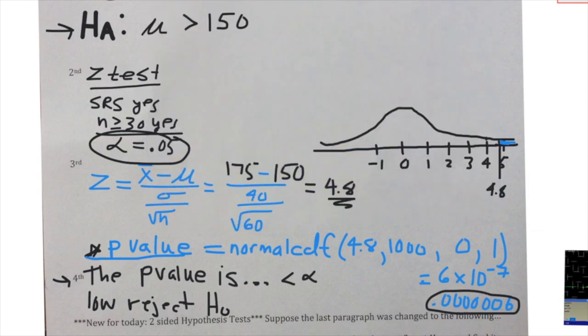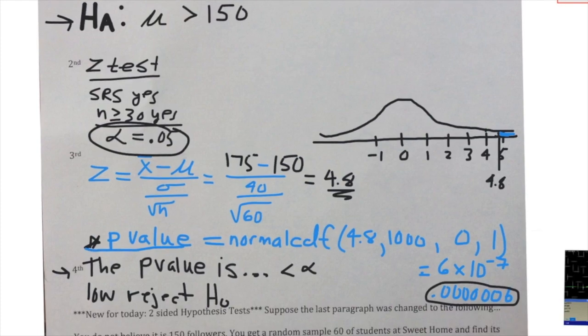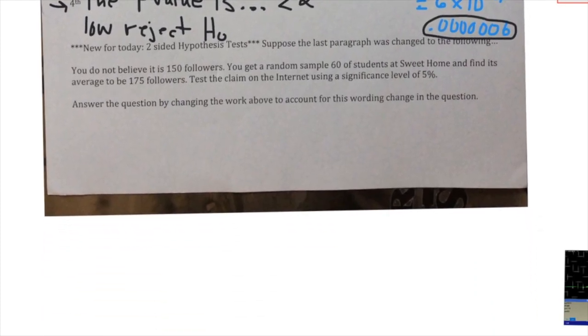So that brings us to the last little bit, and it's just a little bit too. What is a two-sided test and what's that all about? Suppose that last paragraph was changed to the following: it was changed from saying that we believe that the average was too small into saying that we believe that we do not believe that it's 150 followers. So it does not say which direction we believe that the true average would lie—we just don't think it's 150.